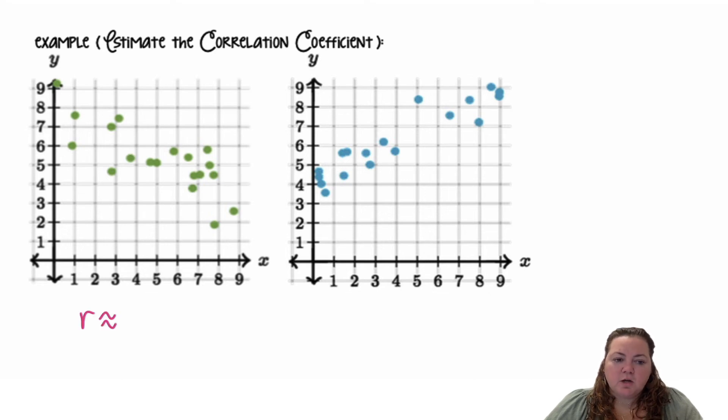I'm going to say for this first one, I'm going to estimate R to be—it's going down. So as I look at a graph from left to right, I can see that the points are decreasing, so it's negative. I'm going to say negative 0.79.